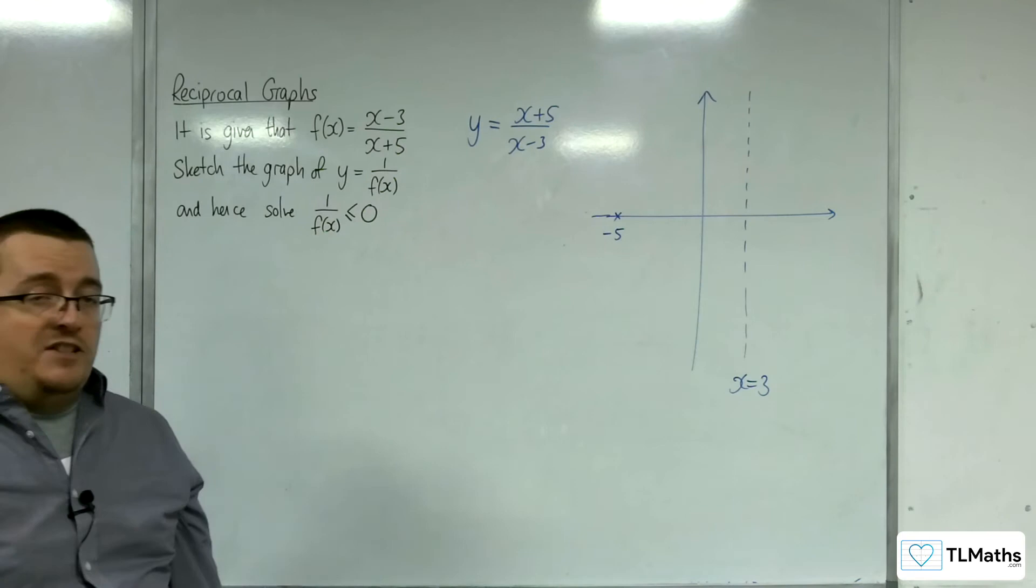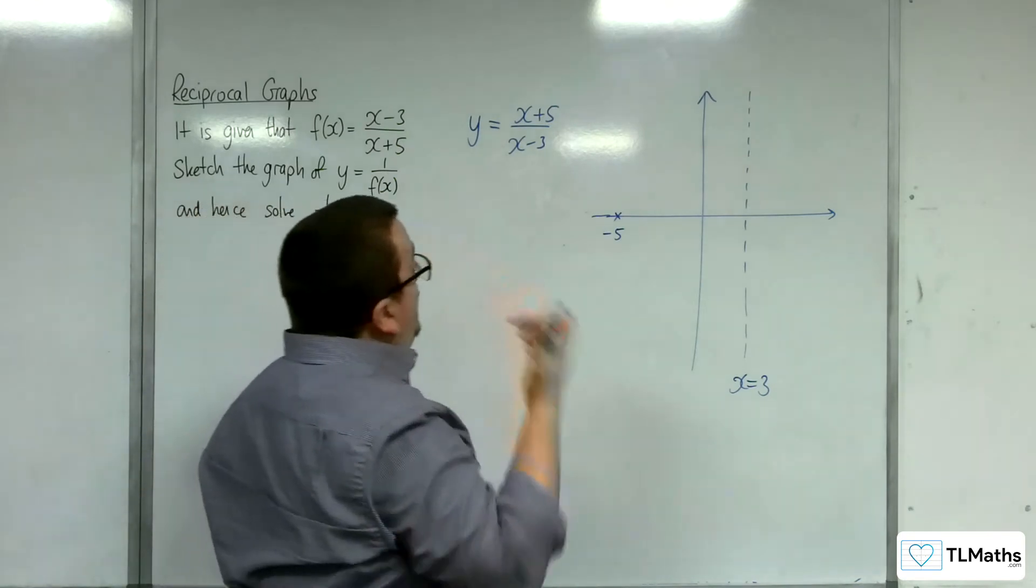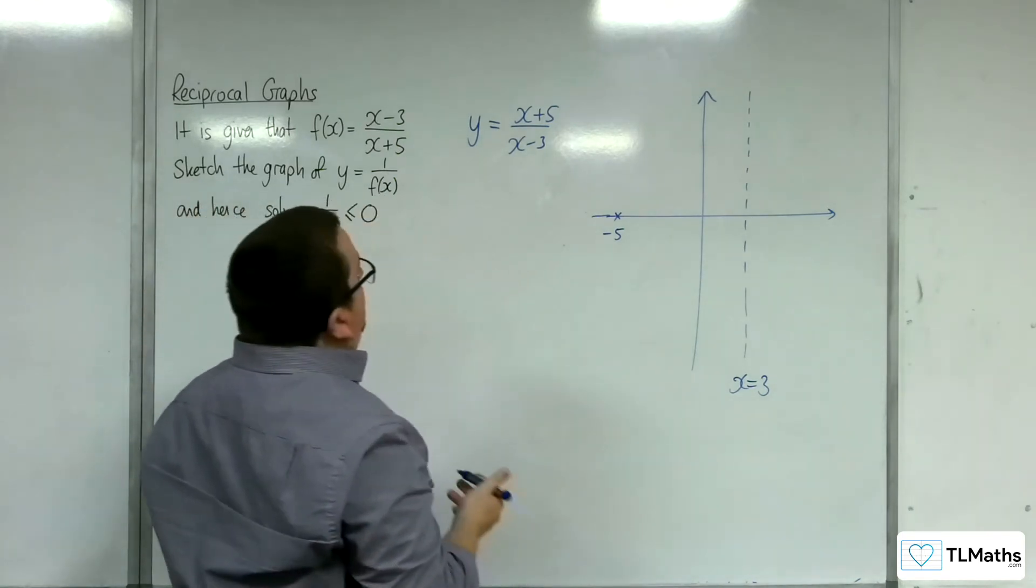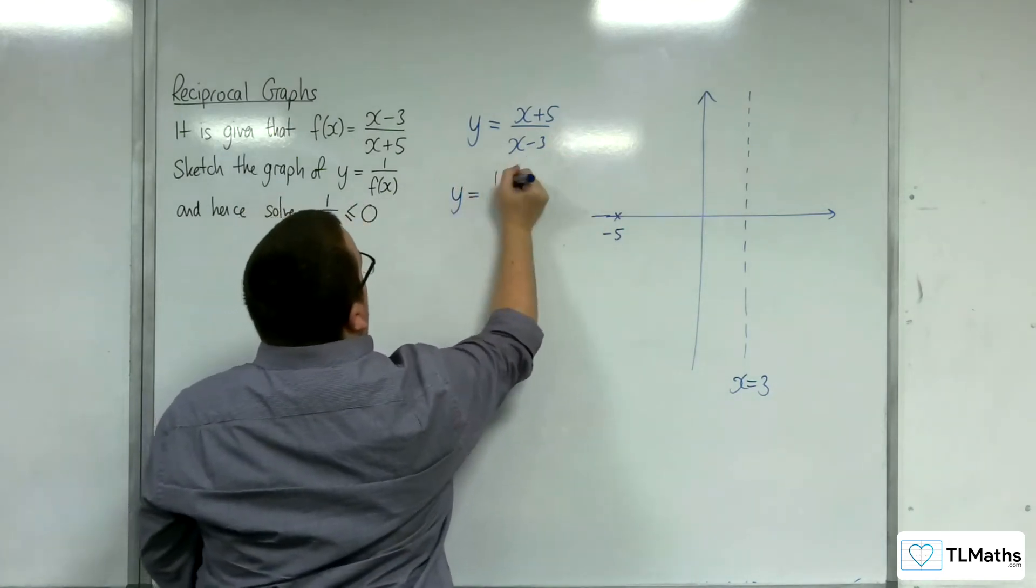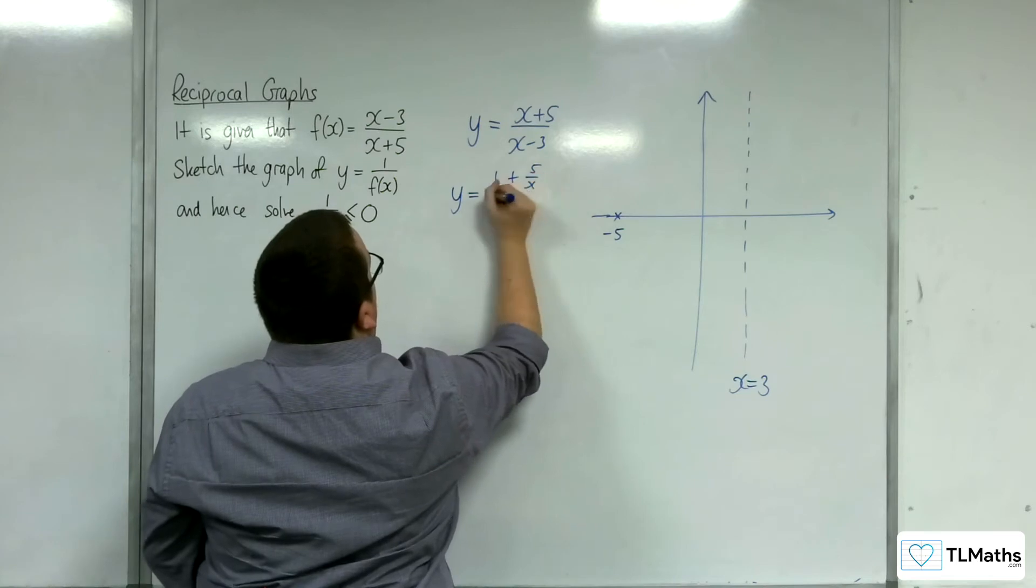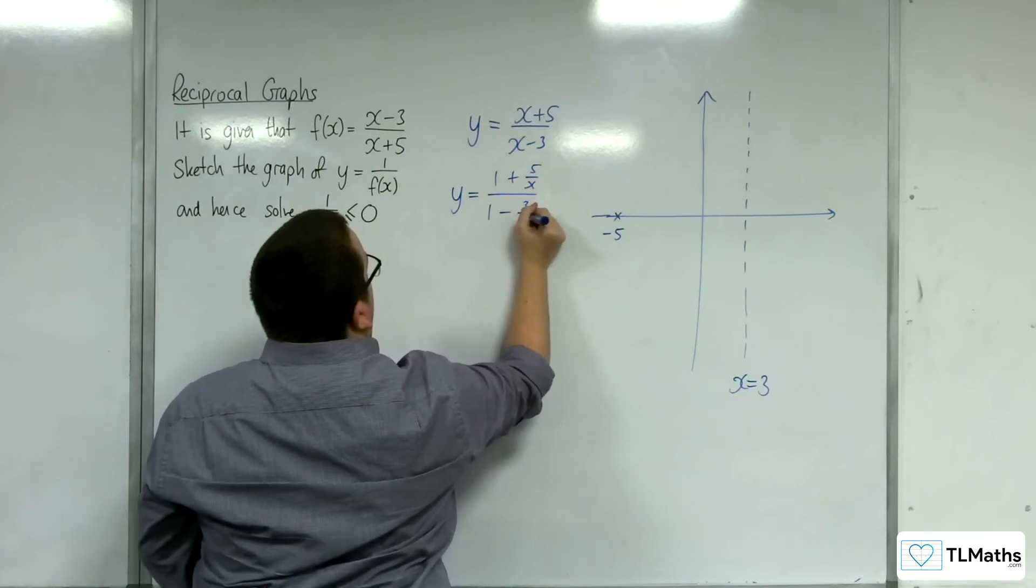Now, is there a horizontal asymptote? Yes, there is. This can be identified by dividing top and bottom by x. So, we're going to get 1 plus 5 over x over 1 take away 3 over x.